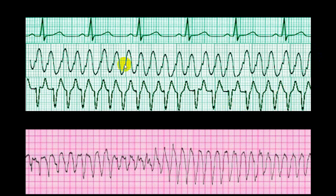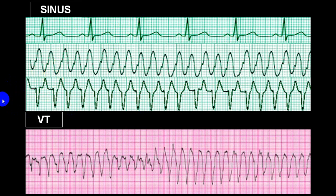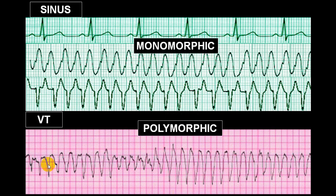Depending on findings, label accordingly. These monomorphic sustained VT can be stable or unstable; in unstable it can become pulseless. Here you can see pure sinus rhythm on one side, while on the other this is sustained monomorphic ventricular tachycardia. Polymorphic VT has QRS complexes of different shapes — this is different, this is different, this is different — so this is polymorphic sustained VT, which is very frequently unstable and will often become pulseless.